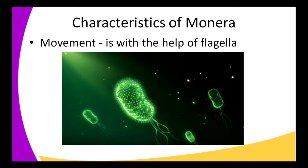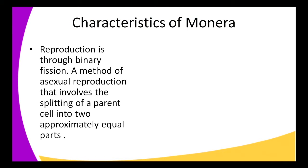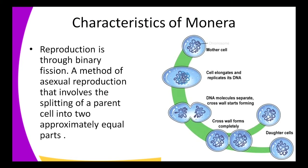How do we identify Monera by their movement? They use flagella. As you can see, the flagella help in the movement of cells — like the tail of a fish. The bacteria use the flagella to whip around so they can easily move.